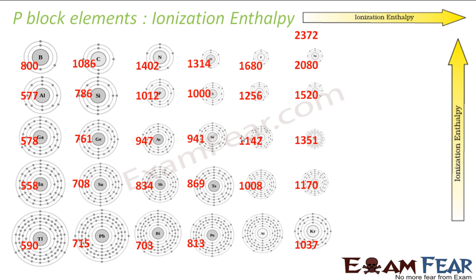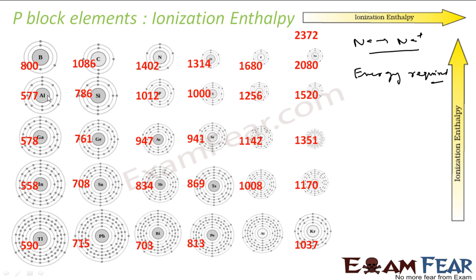Ionization enthalpy is the amount of energy required to pluck one electron from an atom to form a cation. The values increase because more and more energy is required.